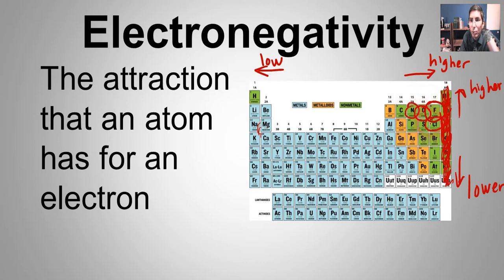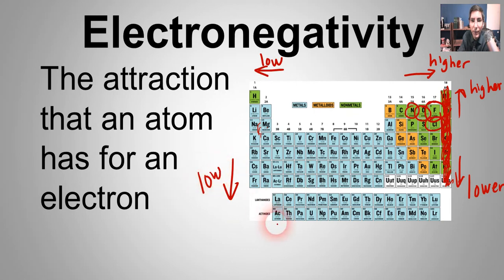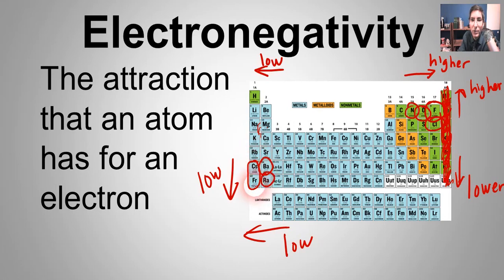Oxygen, nitrogen, and chlorine are also pretty high up there. If you want to look at atoms with low electronegativities, look to the bottom and to the left. Cesium, francium, barium, radium — all of these down here are going to have very low attractions for electrons.